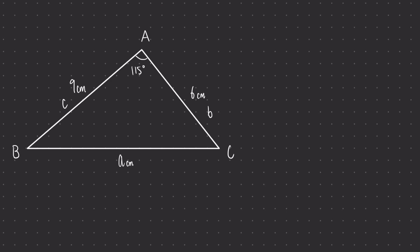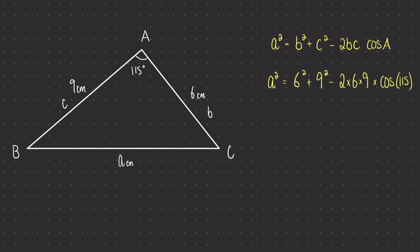Let's write down the cosine rule to find a side length — that means we're going to have the form with a squared on one side of the equation. Looking at this form, it's now time to substitute in everything that we know. We don't know the side length a, so we're going to leave that as a squared. The rest of the unknown variables can now be replaced with their numbers. You can see that I've placed the angle 115 in brackets after cos — that's because in your calculator you'll need to close those brackets, and it also reminds us that the cosine function always takes an angle inside.